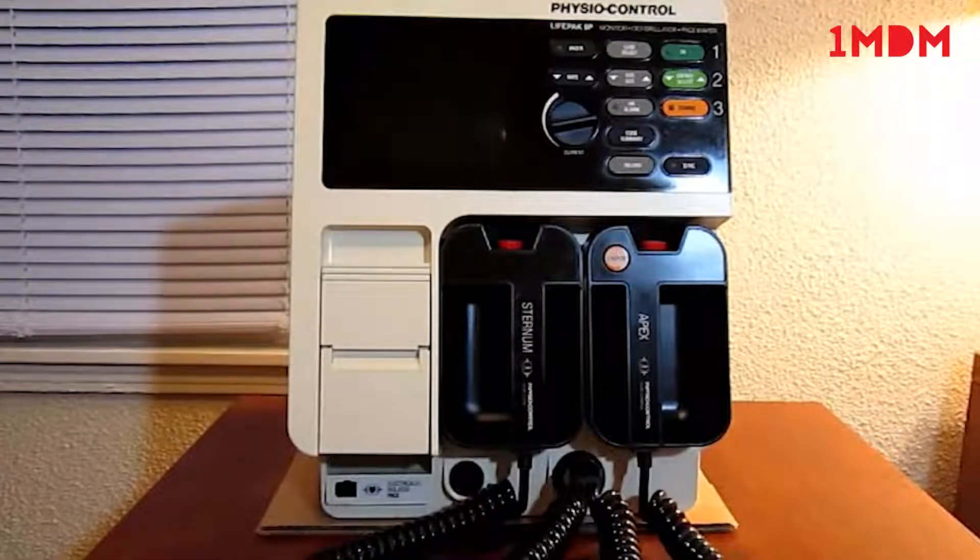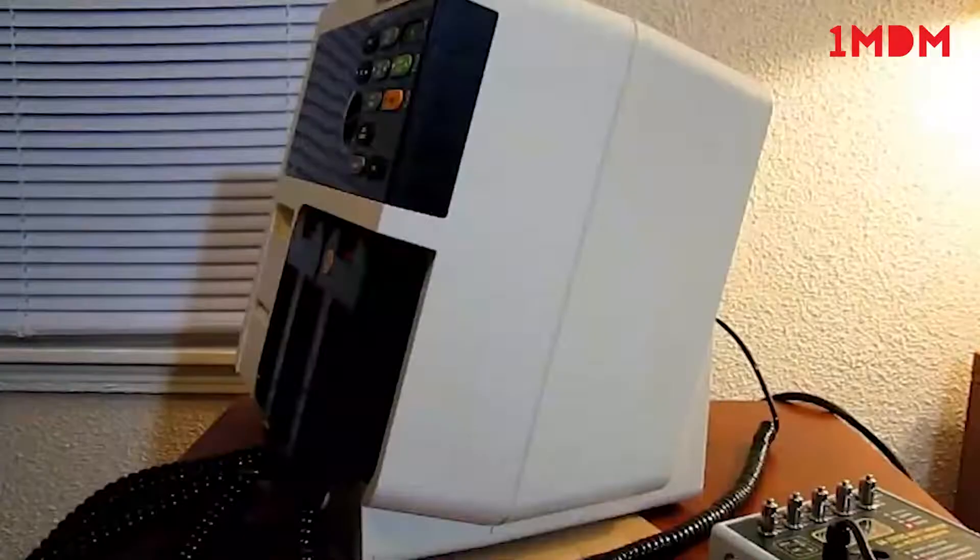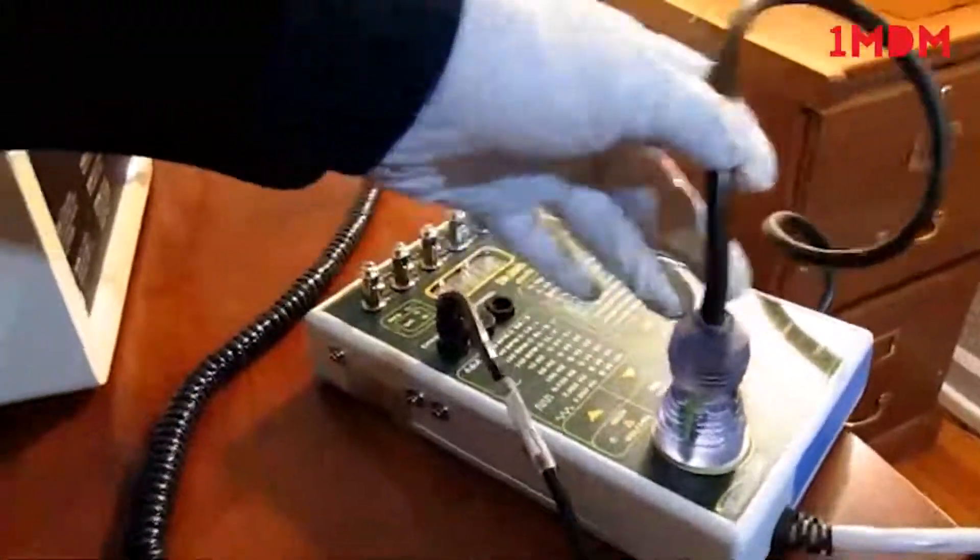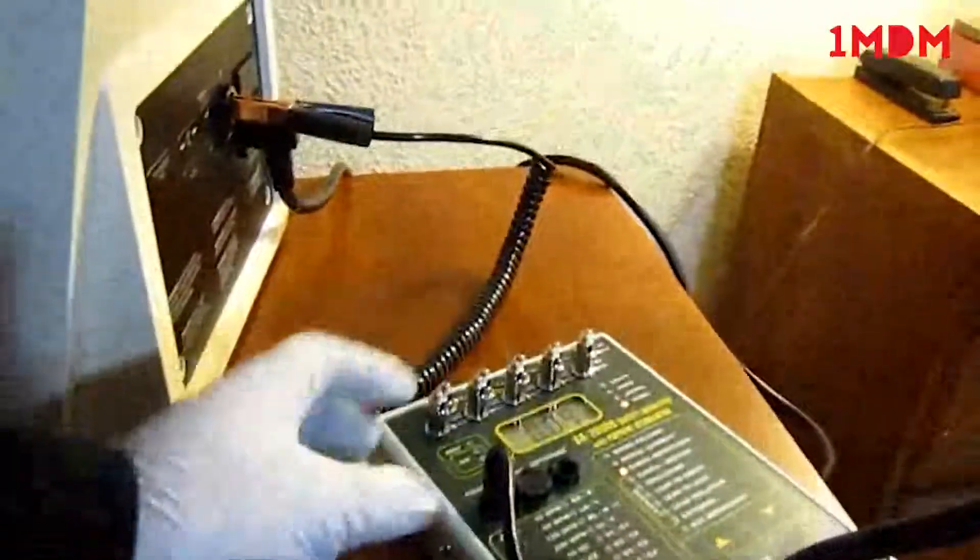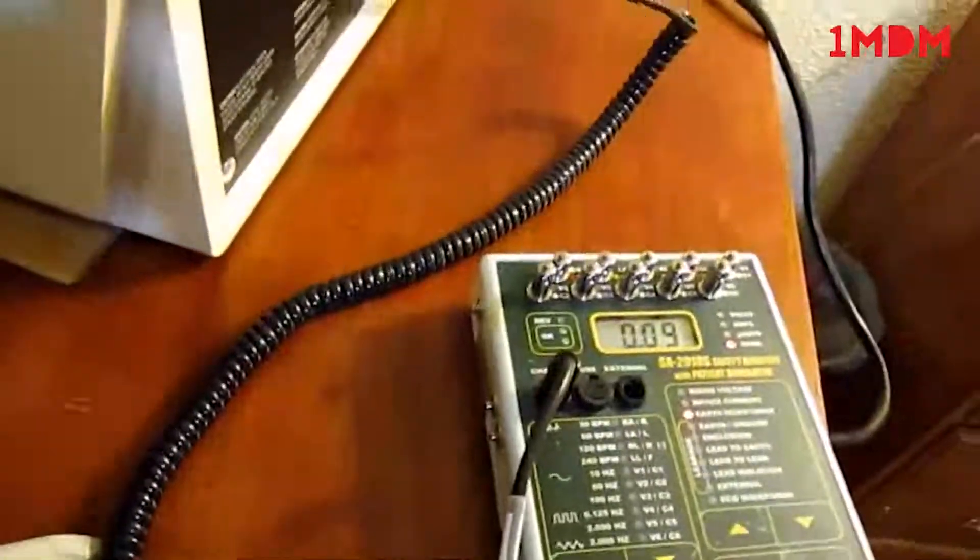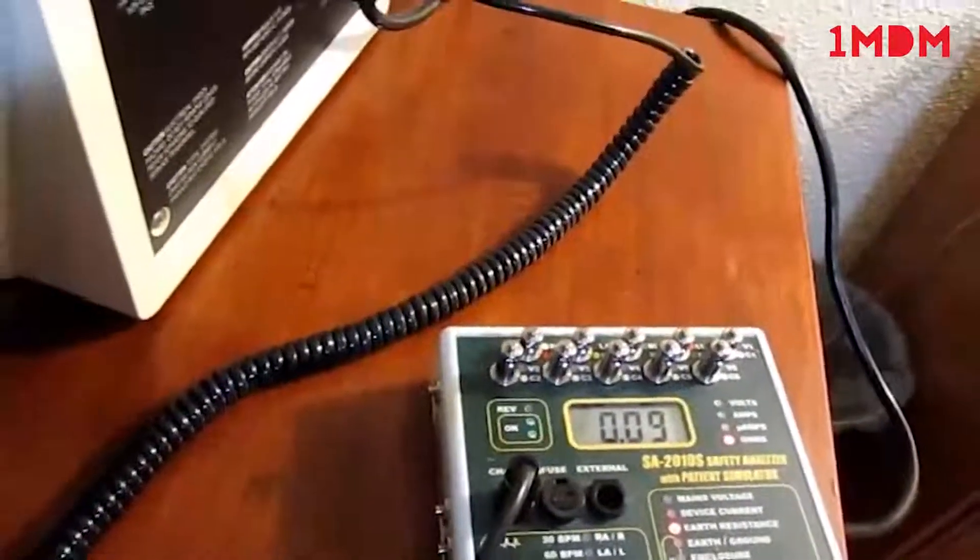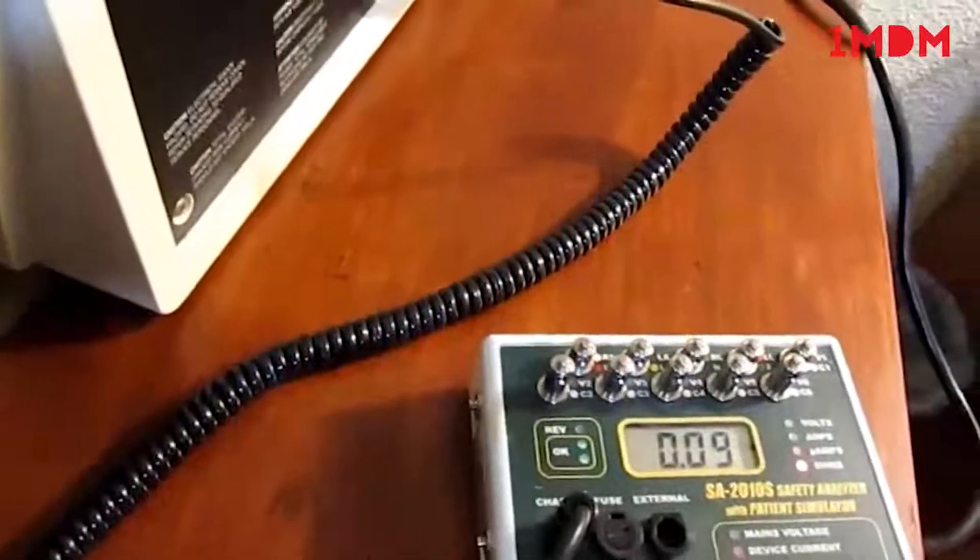So now we're going to do a function test. We have our safety analyzer hooked up to this unit. This unit does come with its own power cord, which is in really good shape as well. For the resistance of the power cord, the OEM recommends less than 0.5. We're getting 0.09 ohms.